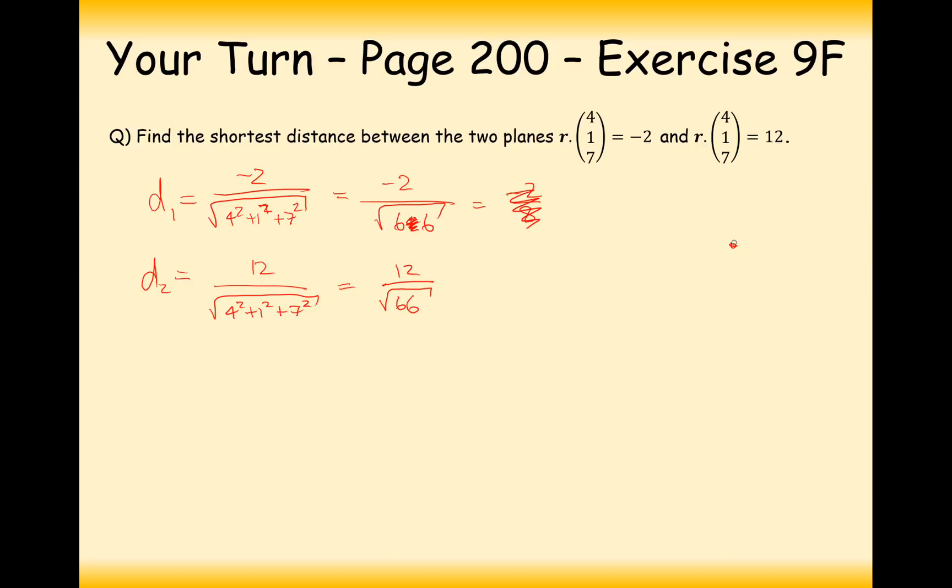Because what's going to happen here is we're going to have one plane on top of the origin, one plane much closer to it on the bottom of the origin. We're going to add these two distances together. So it's going to be 12/√66 add 2/√66. We're going to get 14/√66. And we might as well work out the decimal value of this. We get 1.72, so 1.72 is your answer to three significant figures.